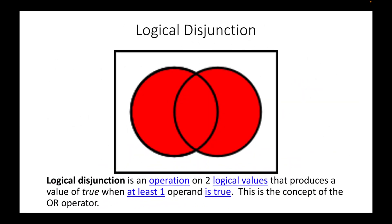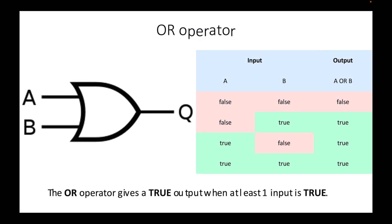Logical disjunction is an operation on two logical values that produces a value of true when at least one operand is true. This is the concept of the OR operator. The OR operator gives a true output when at least one input is true. Therefore, the output would only be false when both inputs are false.